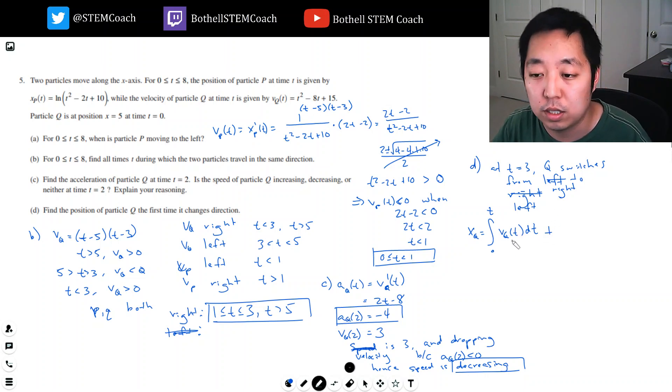So then this equals the integral of this: one third t cubed minus 4 t squared plus 15t, evaluated from t equals 0 to t, plus 5. One third t cubed minus 4 t squared plus 15t plus 5. So xq, his position at time 3... 3 is when he switched his directions.